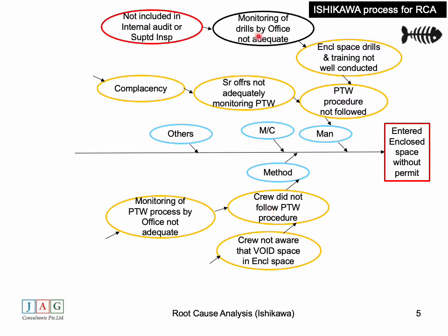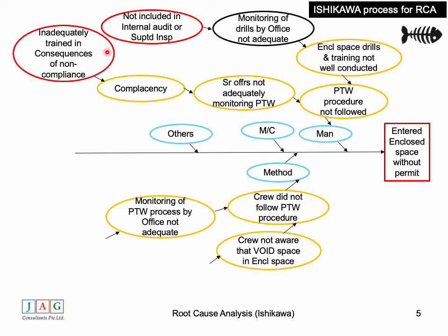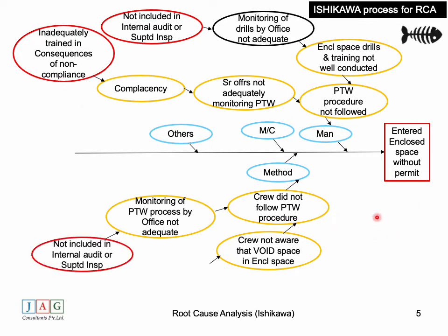Examining why monitoring of drills by the office was not adequate: it is possible that the process of monitoring enclosed space drills is not being adequately addressed in the internal audit or superintendent's inspection of the vessel. Regarding complacency: it is possible that personnel on board are not adequately trained on the consequences of non-compliance with permit to work procedures, and this monitoring has not been included in internal audits or superintendent inspections.